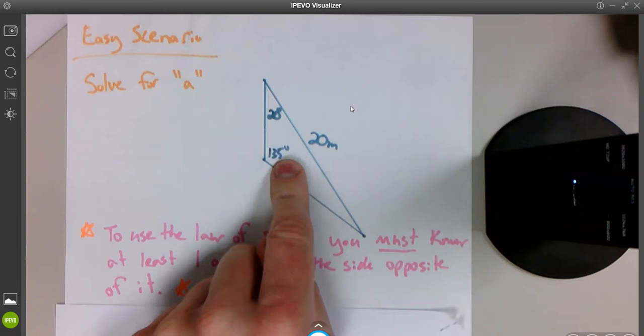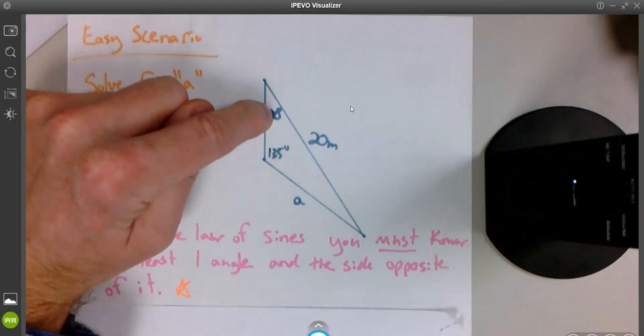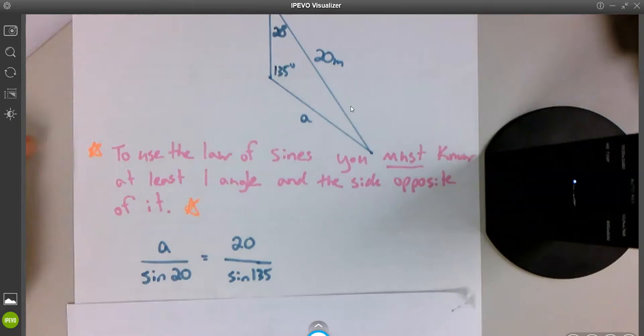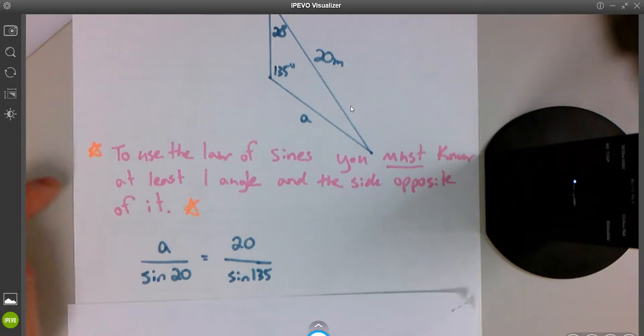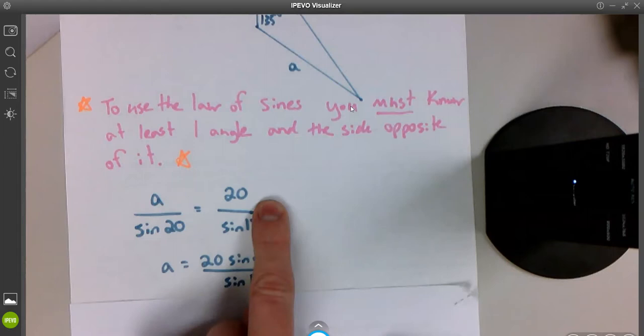So what the law of sines says is the side over the sine of the angle across from it is the same throughout the entire triangle. So 20 over the sine of 135 has to be exactly the same as A over the sine of 20. That ratio has to be the same throughout the whole triangle. So we set that up. It's a little equation. A over the sine of 20 equals 20 over the sine of 135. Common mistake here. I see a lot of students sometimes just put 20 over 135 equals A over 20. And they forget the sine. It's called the law of sines for a reason. You have to take the sine of those angles for this to be true.